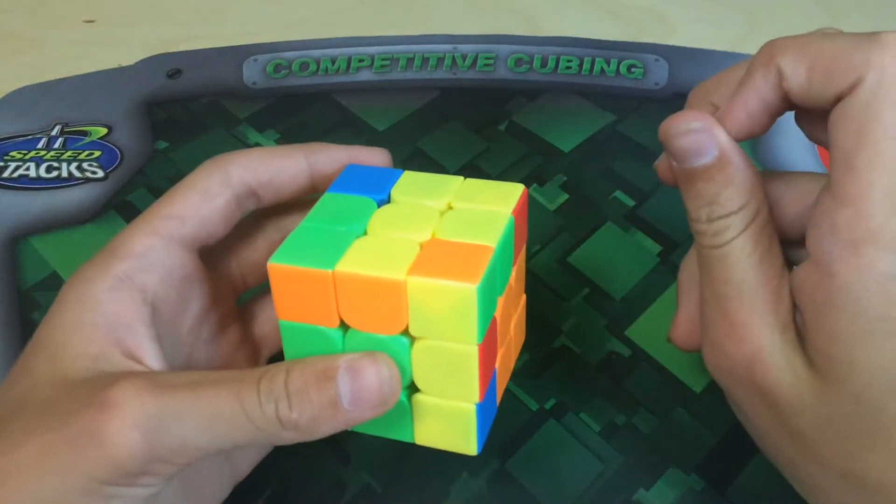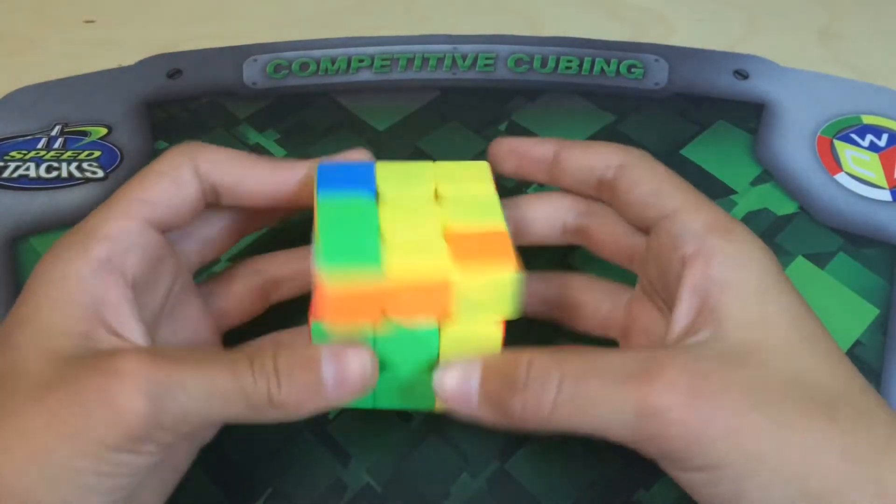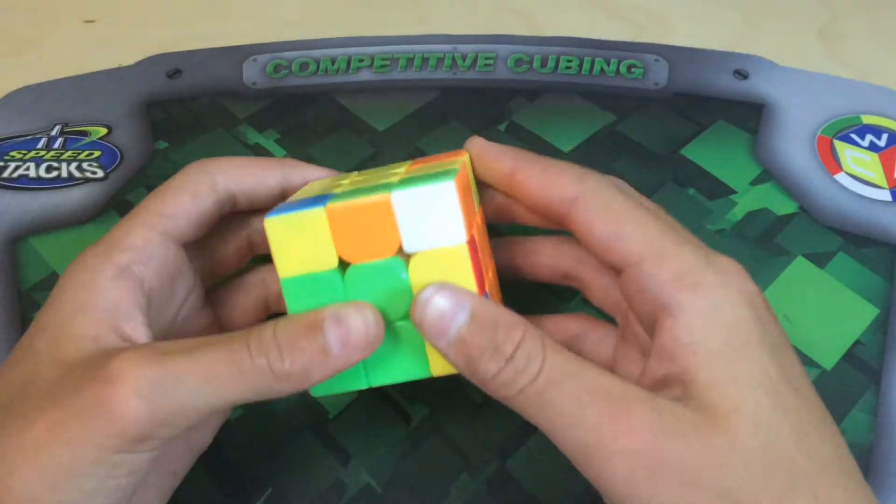And then you just do a sledgehammer, which is R prime F R F prime. And that will orient all of your edges. And then you can solve your F2L case rotationless.